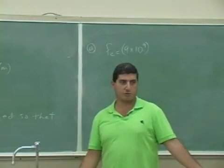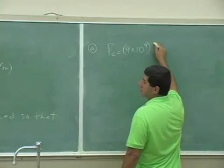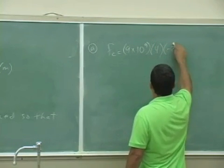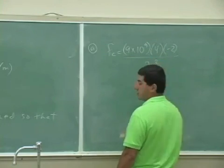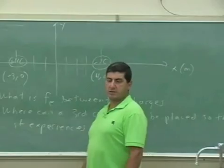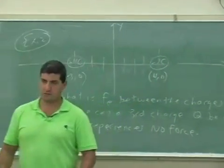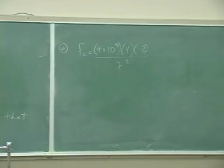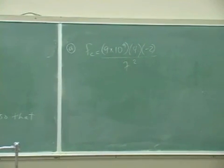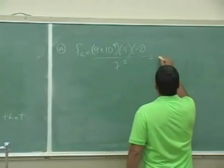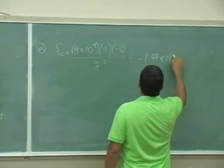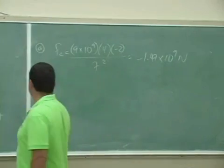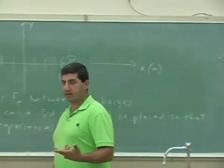K is nine times ten to the ninth — a pretty easy number to remember, they're both nines. The charge of one is four Coulombs, the other is negative two Coulombs. The distance between them is seven meters, so we square that. Four plus three is seven meters. It's a big number because the charges themselves are big, so we'd expect that.